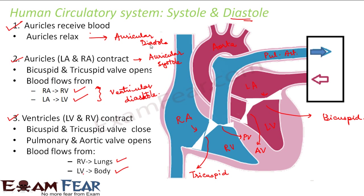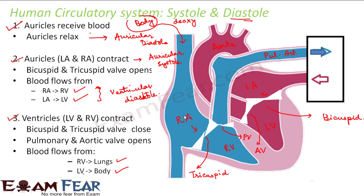To trace the deoxygenated blood: it came from different body parts to the right auricle. When blood entered the right auricle, the auricles were relaxing. Once filled, they contracted and the tricuspid valve opened, so blood entered the right ventricle. When blood was entering the right ventricle the ventricles were relaxing — ventricular diastole. Once the ventricle was filled, the pulmonary valve opened, blood flows into the pulmonary artery, and the ventricles contract — this is called ventricular systole.